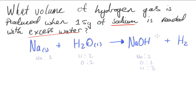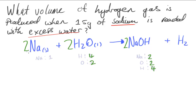The sodium is balanced, so let me balance the hydrogens. I can get both sides up to four hydrogens by multiplying H₂O by two — giving four hydrogens on the left. I multiply the H in NaOH by two as well, giving four hydrogens on the right. That increases the oxygens on the right to two and sodium to two. Now with two sodiums on the right, I multiply sodium on the left by two. Oxygens and sodiums are now balanced, and hydrogens are balanced.